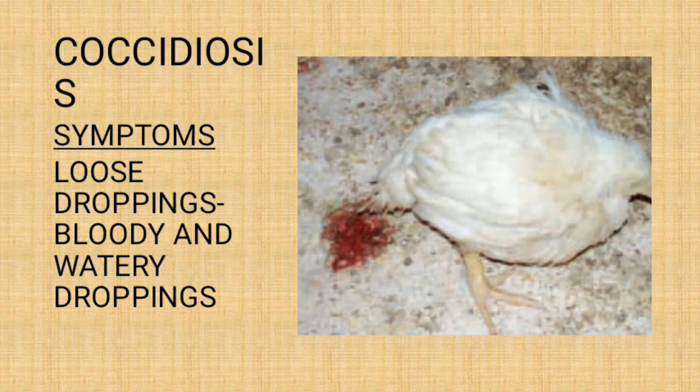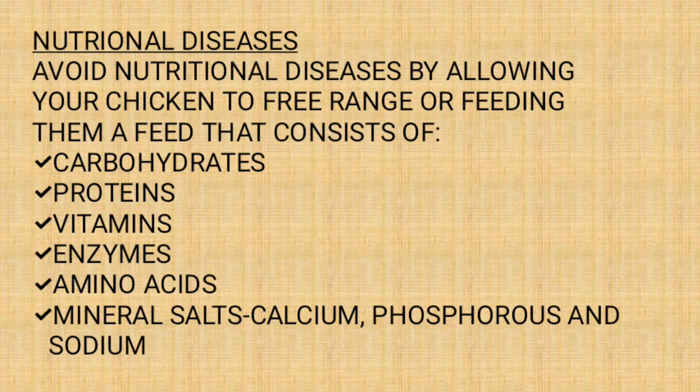Last but not least in the list of infectious diseases, the final common one is coccidiosis. The main signs of coccidiosis are blood in the chicken droppings, or the chicken releasing watery droppings. Those two are the major signs. You can see in the picture that there is blood in the chicken droppings.